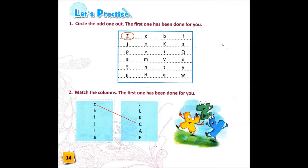C, B, F are in small letters, whereas Z is in capital letters. So this is the odd one in this first one. So the odd one you have to circle it.